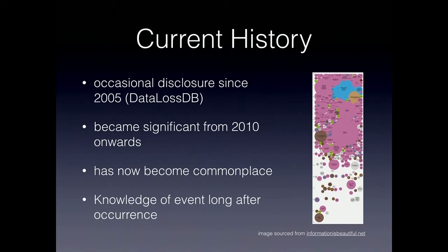There's been some form of disclosure since about 2005 — the first instance I believe was AOL — but we started seeing a lot more significant occurrences especially with the rise of LulzSec in 2010. These have become quite public and are now almost commonplace; we've already had this week the whole piece on Uber losing 57 million records.